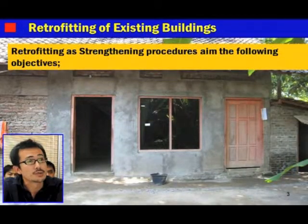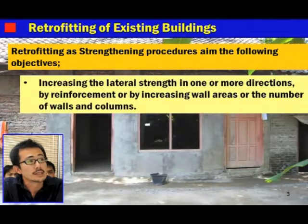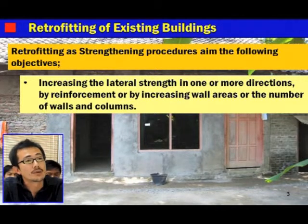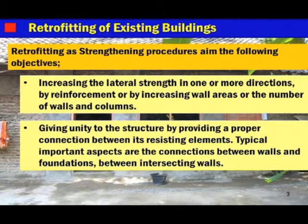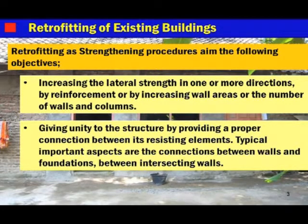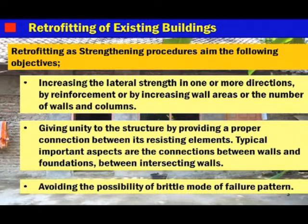Retrofitting and strengthening procedures address the following objectives: first, increasing the lateral strength in one or more directions by reinforcement, by increasing wall area, or by increasing the number of walls and columns; second, giving unity to the structure by providing proper connections between existing elements; and third, avoiding the possibility of brittle mode of failure pattern. These three topics are very important for retrofitting.